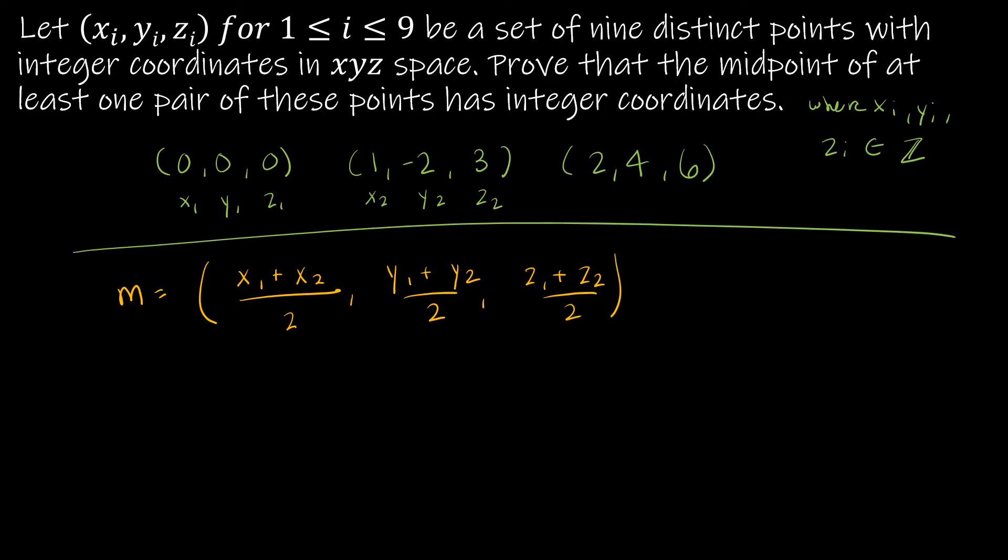For instance, if I were using these first two points that I made up, my midpoint would be (0 + 1)/2, (0 + (-2))/2, and (0 + 3)/2, which would give me 1/2, -1, and 3/2.